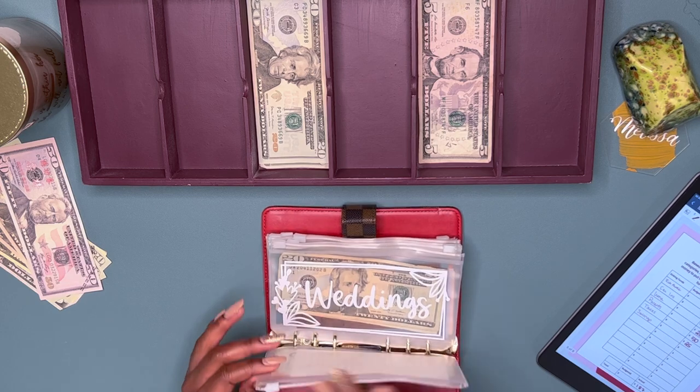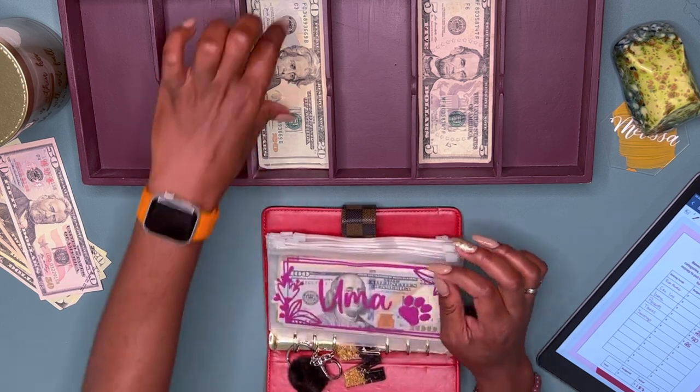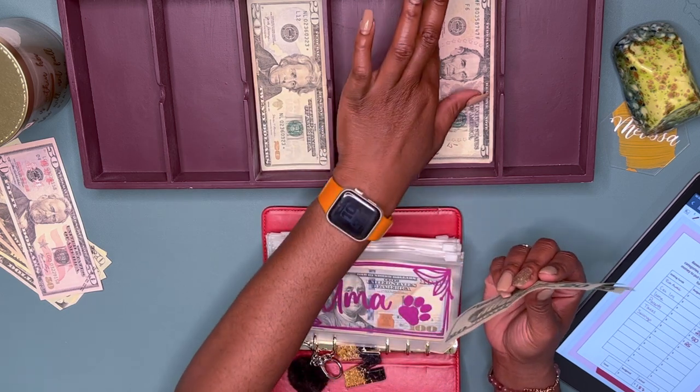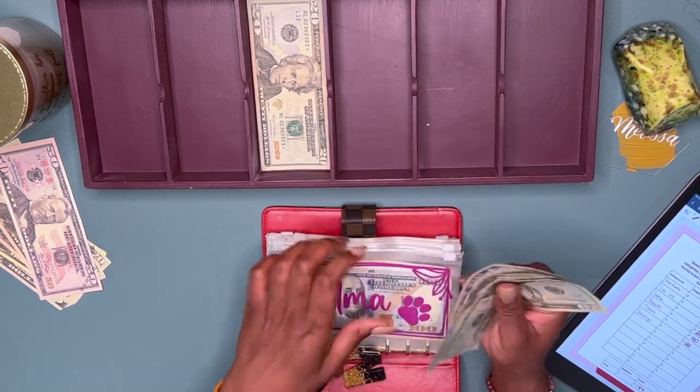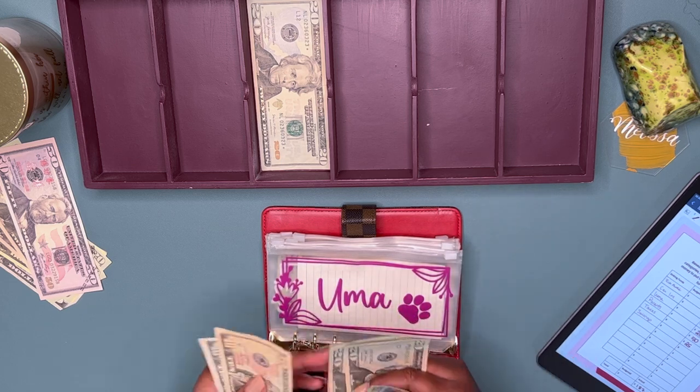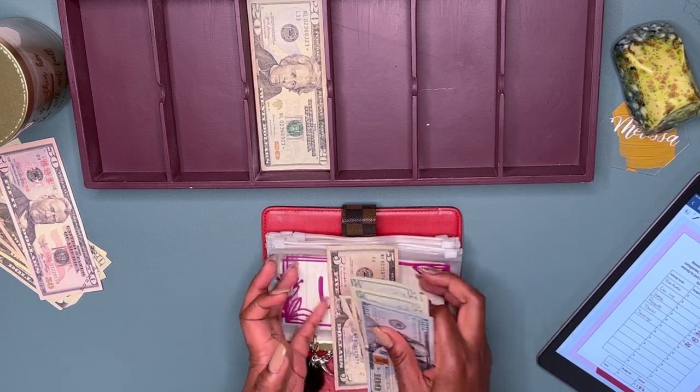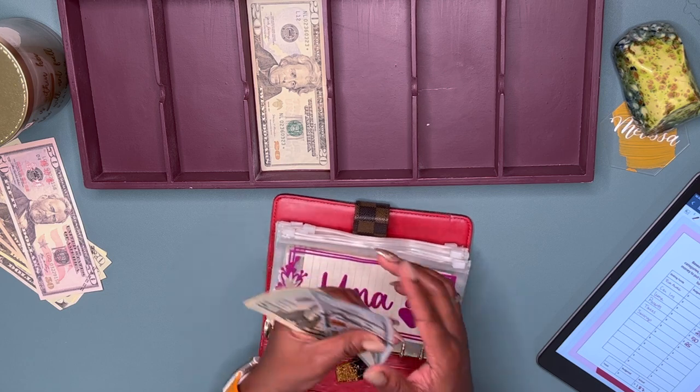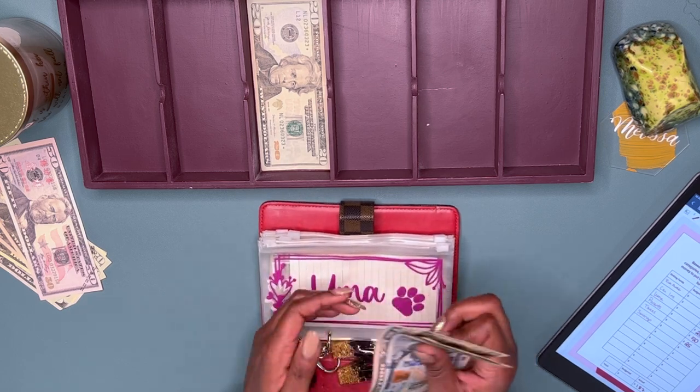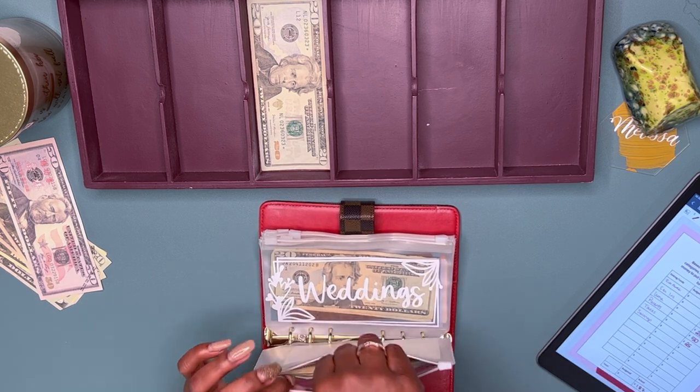Next one is going to be Uma, and she's getting $45, so it'll be two 20s and a 5. And she'll now have $185 for her envelope.